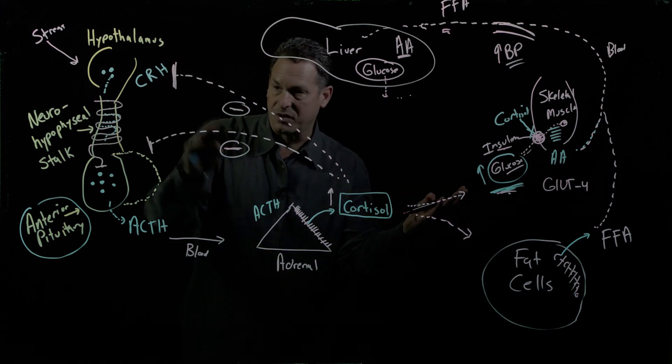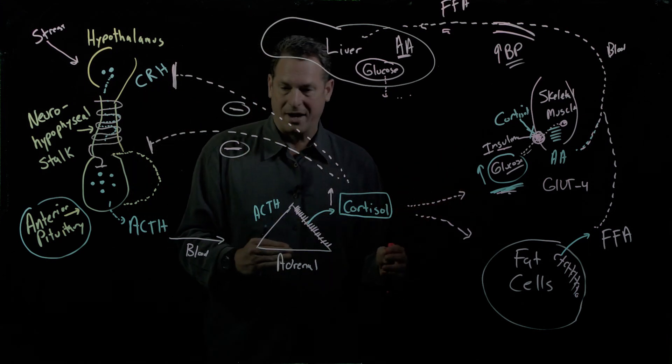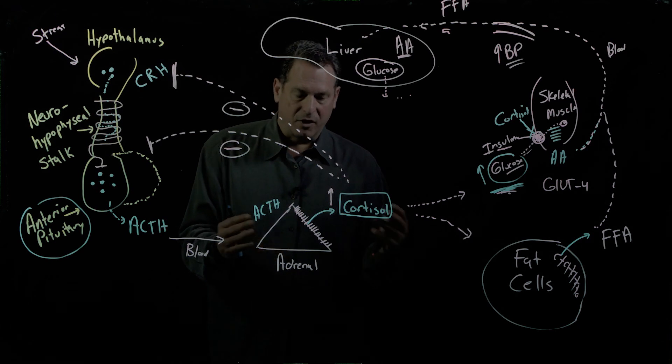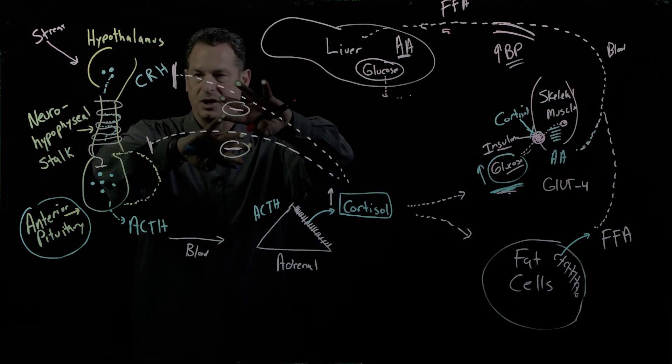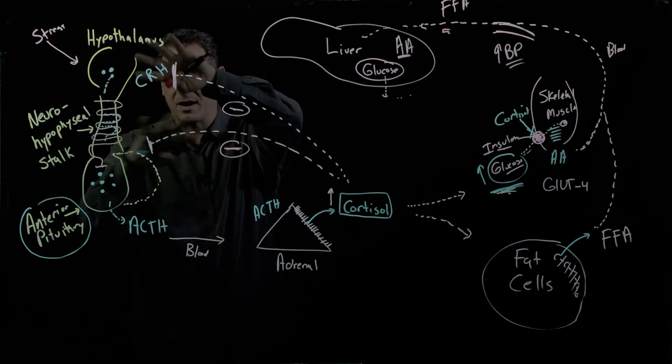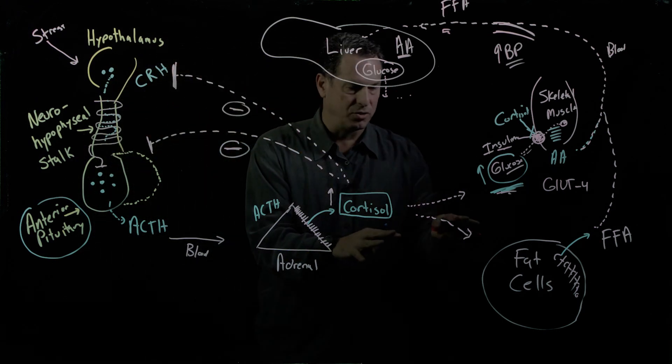So if you have cortisol, the stimuli to make cortisol are quenched. Conversely, if you were low on cortisol and you didn't have high concentrations providing an inhibitory effect, more cortisol would be driven out.